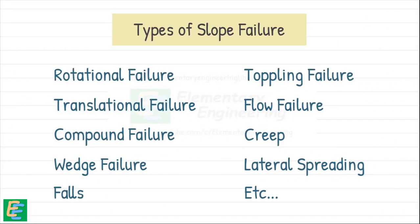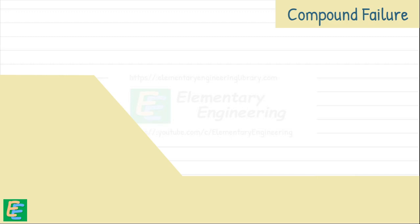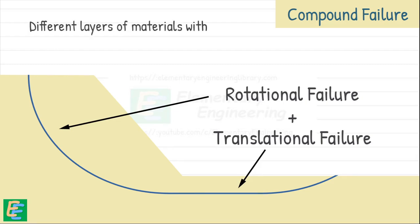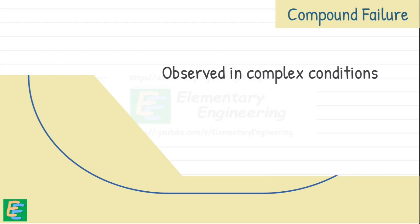Then next type of failure is compound failure. Compound failure is a mix of both rotational and translational failures. It occurs when the failure surface is not purely curved like in rotational failure or purely flat like in translational failure, but instead incorporates elements of both. The upper portion of the slope may fail in rotational manner where the material moves along a curved surface, while the lower portion may fail in a translational manner where the material slides along a more or less horizontal or flat surface. This combination often happens in slopes where different layers of material with varying strengths or properties are present. This type of failure is observed in more complex slope conditions where the failure is influenced by both geometry of the slope and the material characteristics.